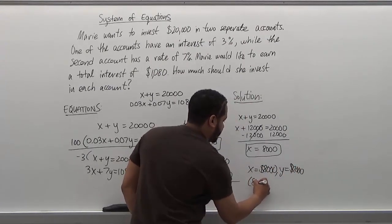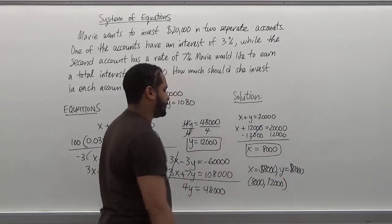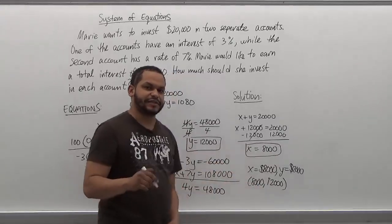So our solution for this, 8,000 and 12,000, where x represents the first account and y represents the second account. Congratulations.